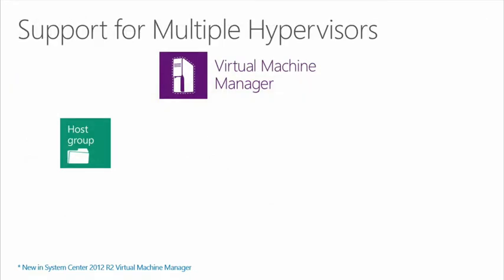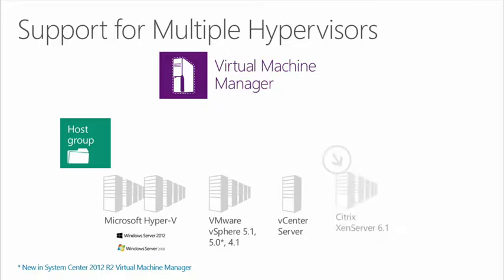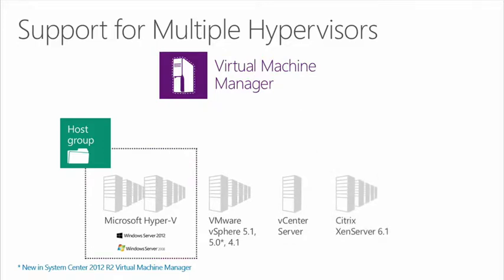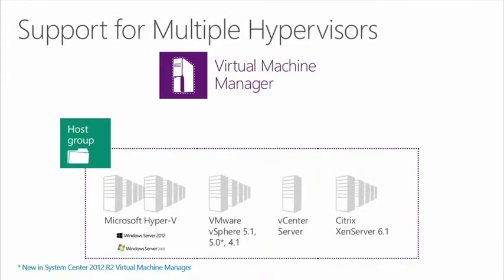The nice thing about the way we support multiple different hypervisors is that once we're managing them under VMM, we treat them very similarly for deploying virtual machines and services. One of the cool things with System Center 2012 is the ability to take these different hypervisors and add them into either their own host group or combine them into the same host group. There are times when, even though I have different hypervisors, I may have a common need for how I want to manage them — maybe dynamic optimization to work a specific way across all. Some people put them in separate host groups, others combine them.